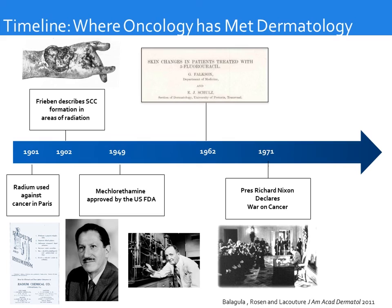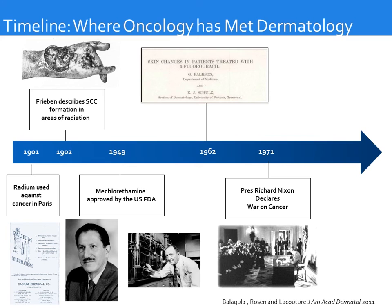In 1971, President Nixon declared the war on cancer in his State of the Union Address — he hoped it would be remembered as the most important day of his administration, which did not quite happen, but it did lead to the U.S. becoming a leader in the fight against cancer. Then in 2007, one of the first ASCO sessions on dermatologic toxicities was presented, and the Multinational Association of Supportive Care in Cancer established its skin toxicity study group.